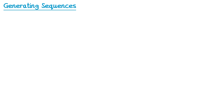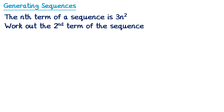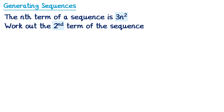This next question is one that students often make a mistake on. The nth term of the sequence is 3n squared, and we need to work out the second term of the sequence. Some students may think you need to do 3 times 2 first for the 3n, giving 6, and then square it to get 36 — but this is actually incorrect. The order of operations says we must do indices before multiplications, so we do the squaring first. We should write this as 3 times 2 squared. We do 2 squared first: 2 squared is 2 times 2, which is 4. So it's 3 times 4, which is 12. So the answer is 12.